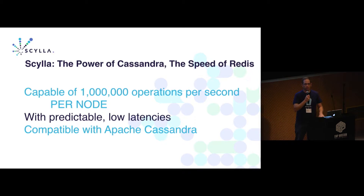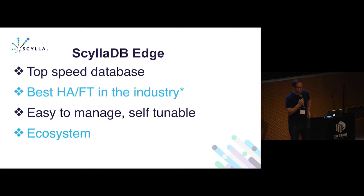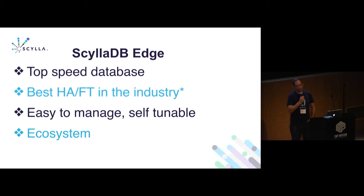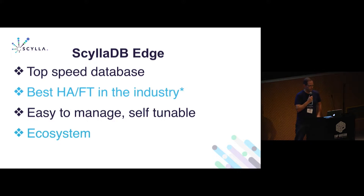We are compatible with Apache Cassandra — we are closing the gap time after time and getting more and more features in. We take advantage of the same high availability and fault tolerance that Cassandra has, meaning that you can suffer a network partition and still access the data. Yes, it is eventually consistent as Cassandra is today.